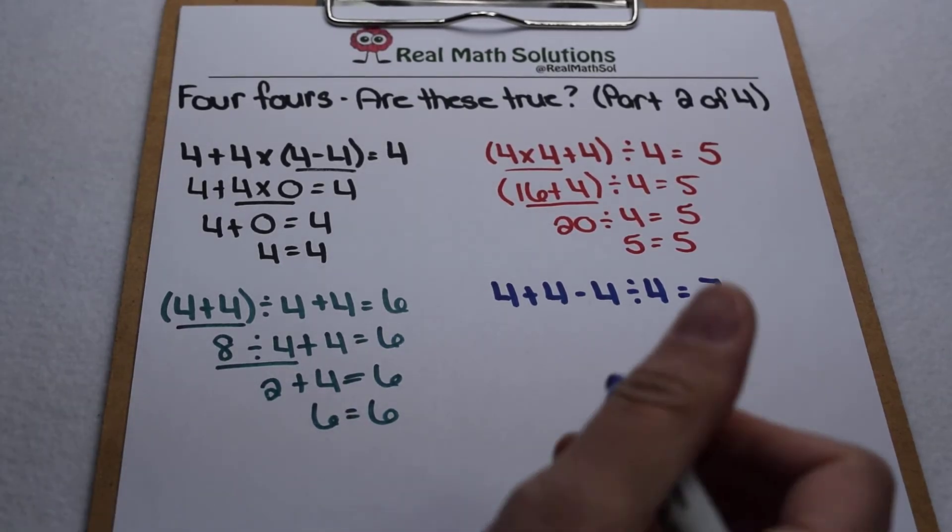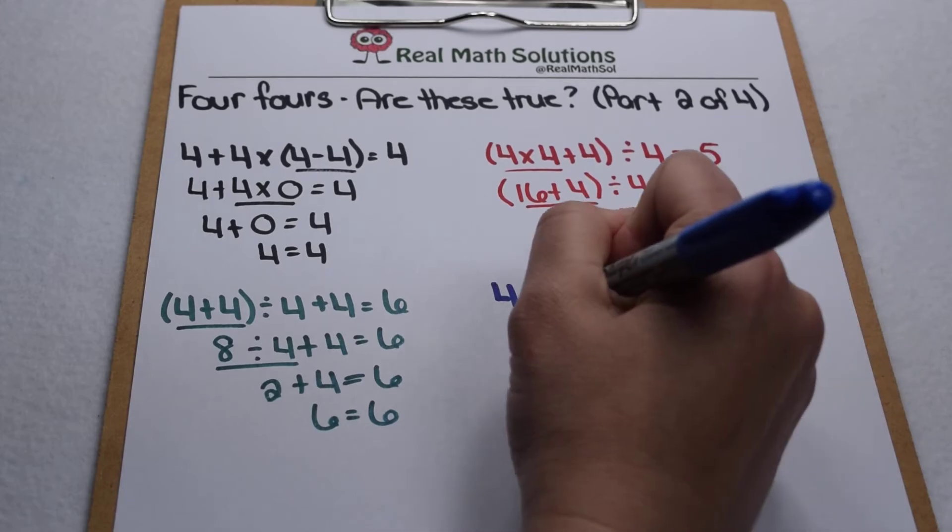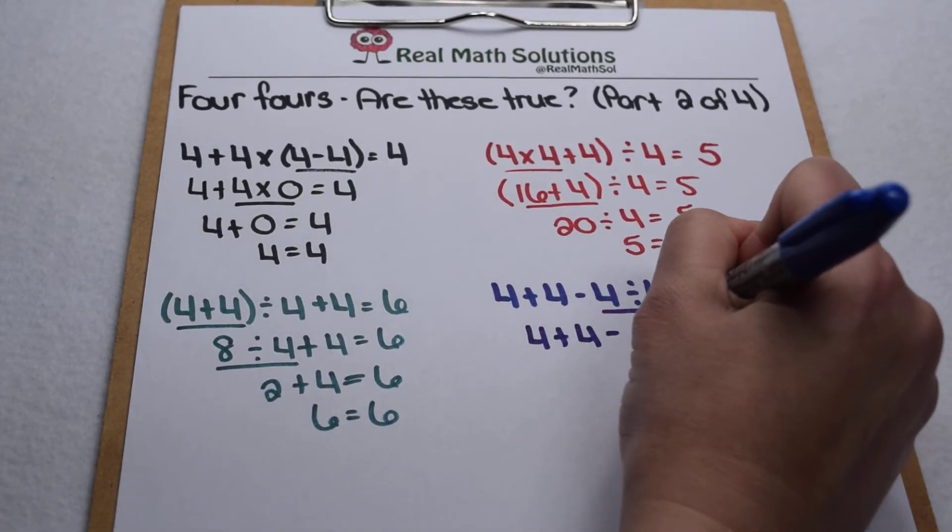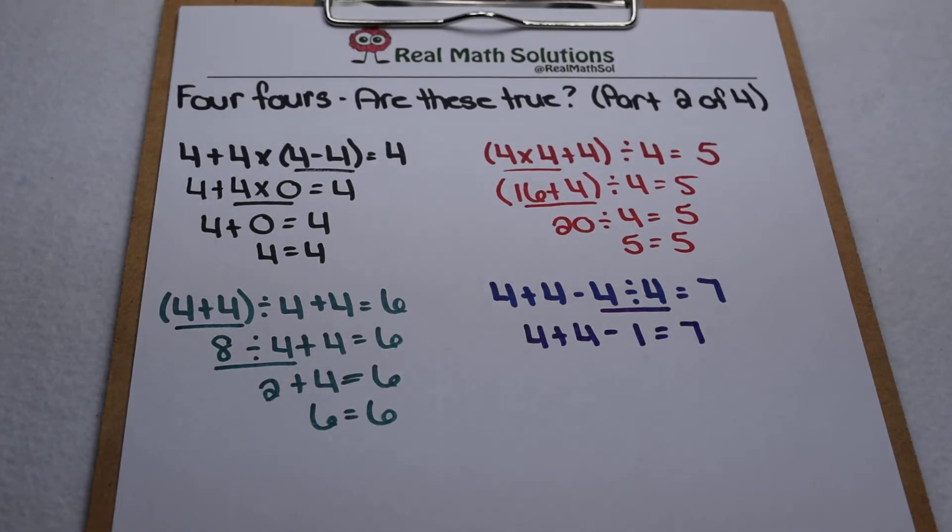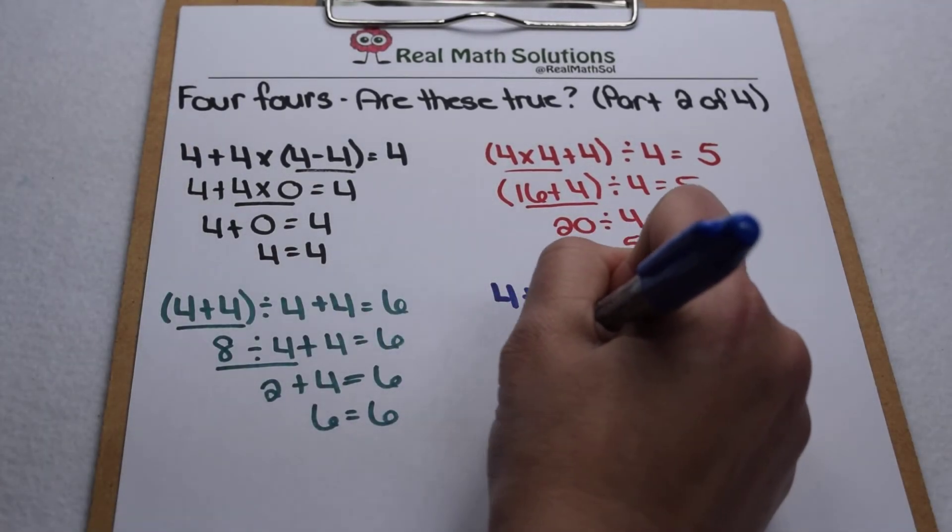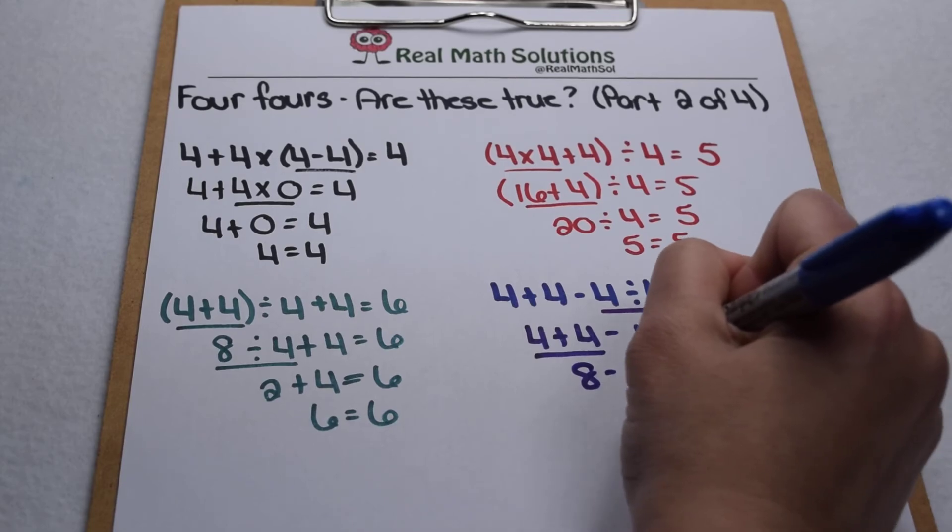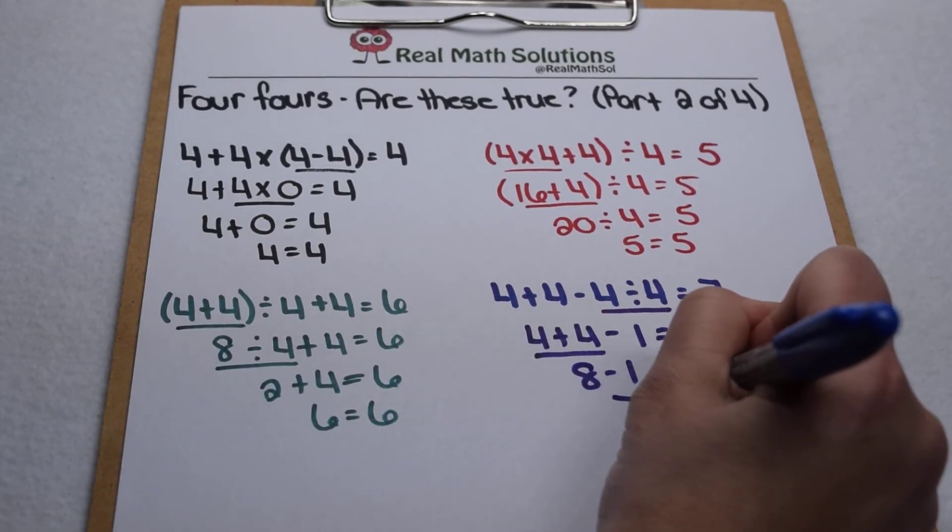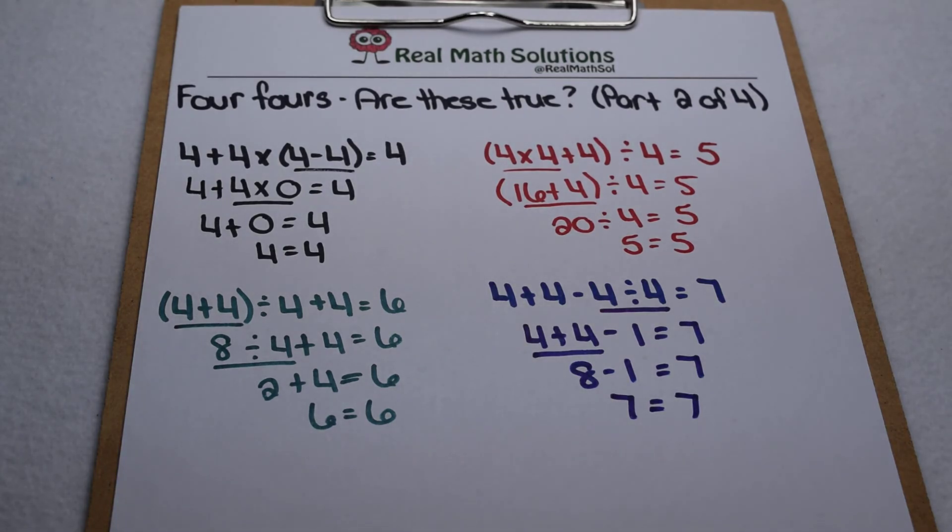Here in our last one we're going to start with division. 4 divided by 4 is 1. So that leaves us with 4 plus 4 minus 1 to equal 7. Addition and subtraction work from left to right. 4 plus 4 is 8. So that leaves us with 8 minus 1. 8 minus 1 does equal 7. So 7 equals 7. So those 4 work.